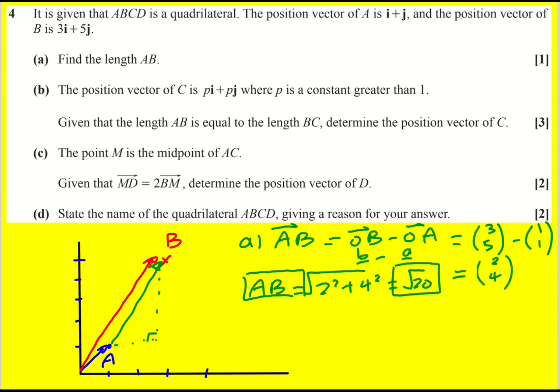Now we're told the position vector of c is pi plus pj. So it's going in the same kind of direction. We don't know exactly where it is, but I'll put it here for the moment. So I can write it like this. And then we're told that the length ab is equal to the length bc. So we know that ab is root 20. Therefore, let's work out bc in terms of p. It's going to be p, p minus 3, 5. Same argument as before, which gives p minus 3, p minus 5.